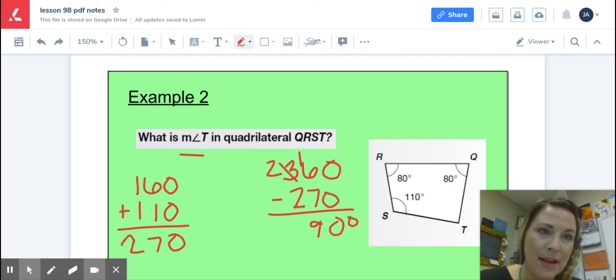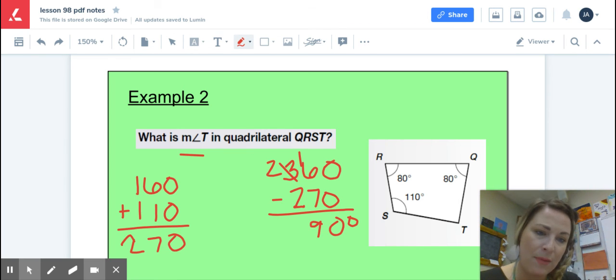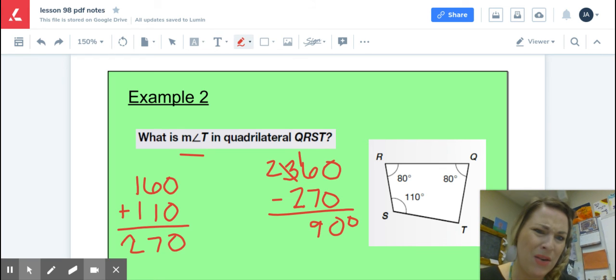And of course, every good mathematician always looks at their answer and asks themselves, is this reasonable? So when I see 90 degrees, I get a really clear picture in my head of what that looks like. A 90 degree angle is like a perfect corner. And when I look at angle T, yeah, that looks pretty perfect. So yeah, that makes sense. 90 degrees, if it was like wide open or looking really small and I got 90 degrees as an answer, I would probably reevaluate my work and make sure that I didn't have some type of addition or subtraction error.